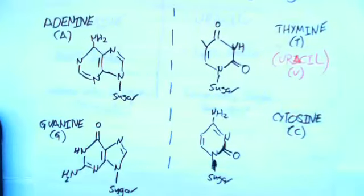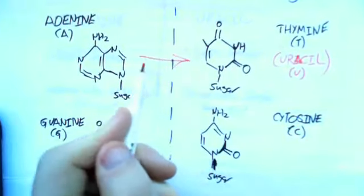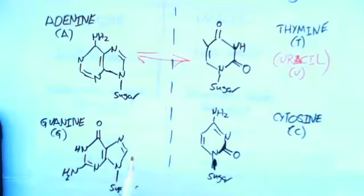During complementary base pairing, they pair adenine to thymine, so A to T, and guanine to cytosine, so G to C. The base pairing is A-T and G-C.